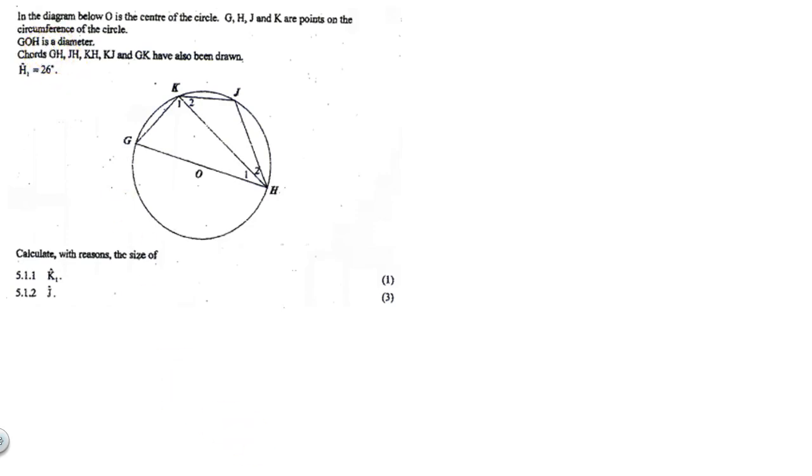So it is important for us to make sure that we read what is given and we make note of it. It says that G, O, H is a diameter, and clearly now I can see that K1 is going to equal 90 degrees, angle in semicircle.